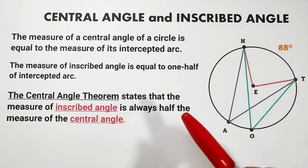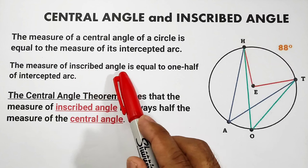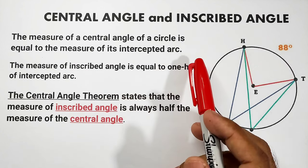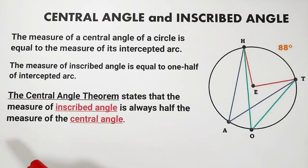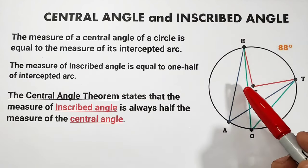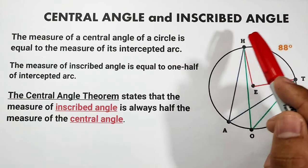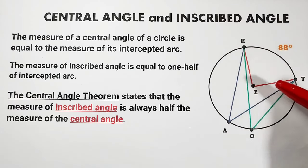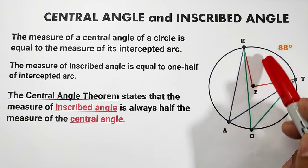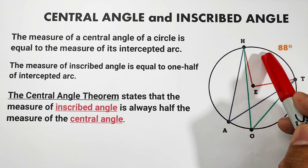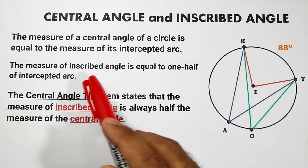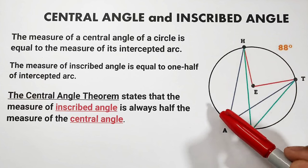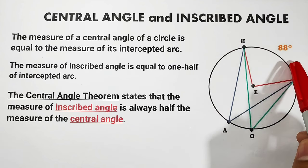The second definition: the measure of an inscribed angle is equal to one half of its intercepted arc. Since the central angle is equal to the intercepted arc, the inscribed angle is equal to one half of the intercepted arc.